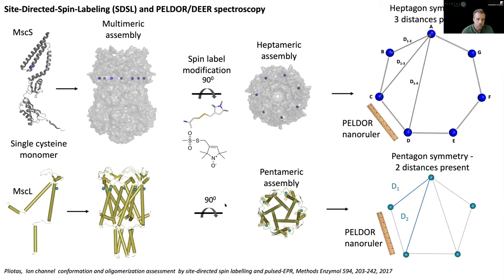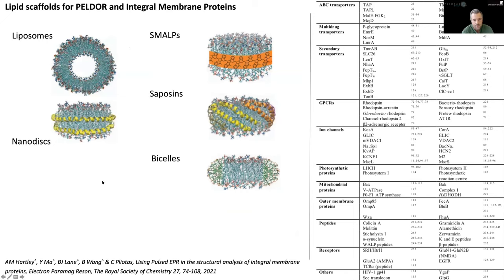We also employ ESEEM — electron spin echo envelope modulation — which allows us to measure solvent or deuterium accessibility within the same residues. The good news is we don't have to remake the samples as they're frozen, and we can remeasure at different frequencies: PELDOR at Q-band and ESEEM at X-band. ESEEM offers single-residue resolution. Before EPR measurements we introduce spin labels — for a heptameric channel you'd expect seven labels per channel; for MscS as a pentamer, you expect two distances due to pentagonal symmetry.